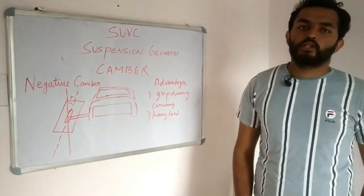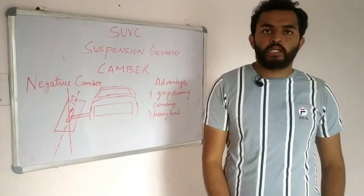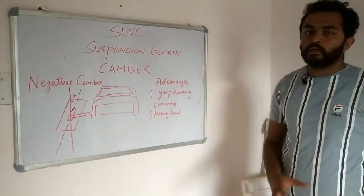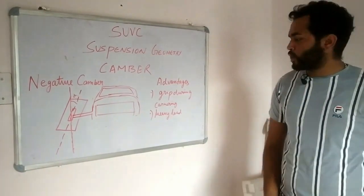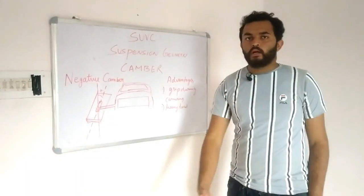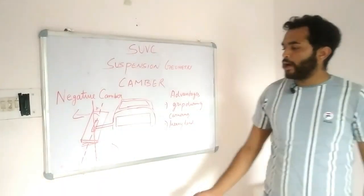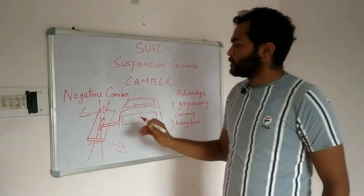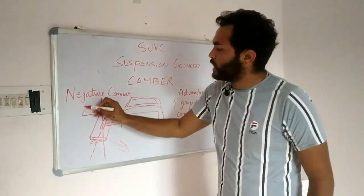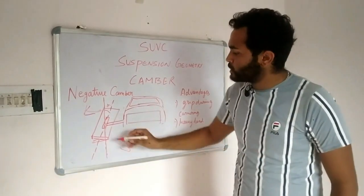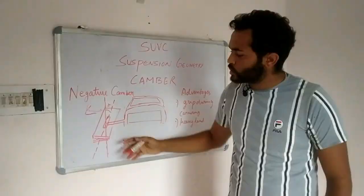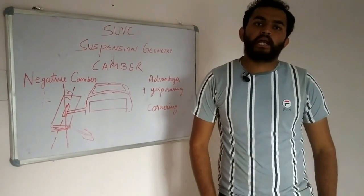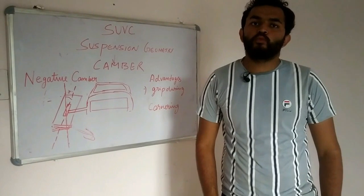Now we can determine the advantages of negative Camber Angle. Negative Camber Angle is used in most vehicles to provide better grip of the tire during cornering. While cornering, if my tire is moving in an inward direction, its contact patch with the road is increasing. This means my driver is feeling more comfortable while turning the car.